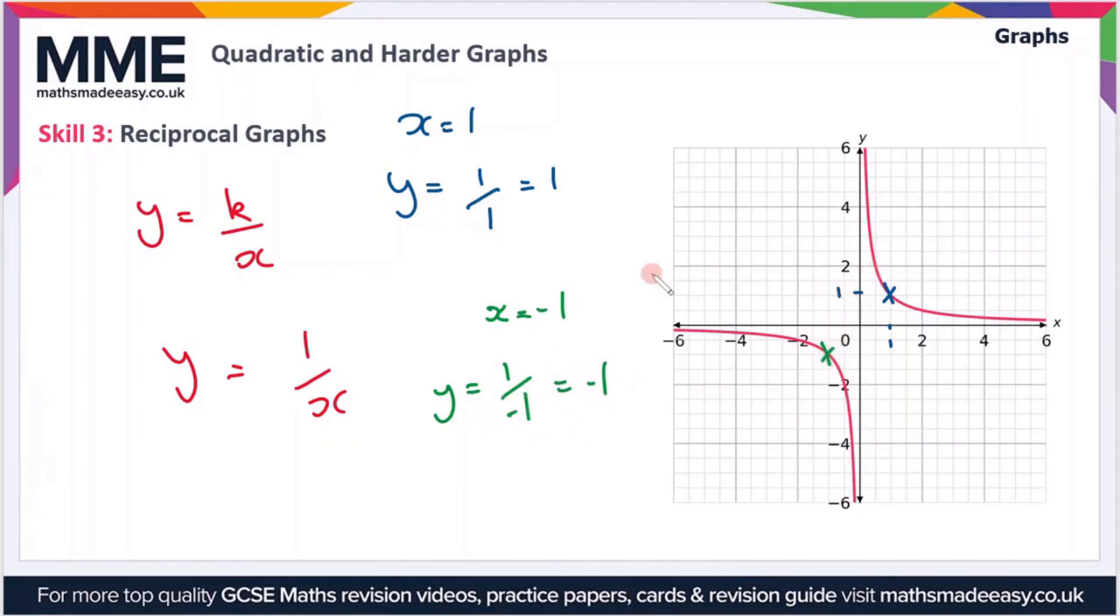So the implication is essentially that anytime you have a negative value of x, you end up with a negative value of y. And anytime you have a positive value of x, you end up with a positive value of y. So the graph is restricted to these two quadrants, that's in the top right here and in the bottom left here.